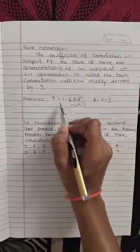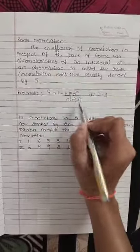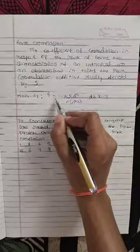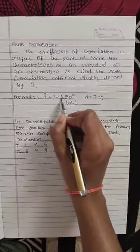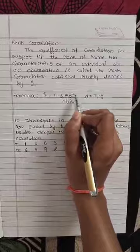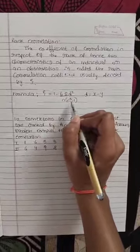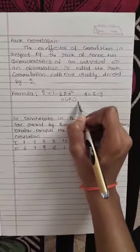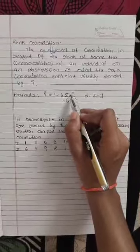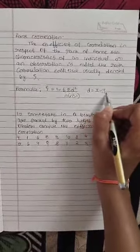The formula for calculating rank correlation is delta equals 1 minus 6 sigma d square by n of n square minus 1. Here d means x minus y.